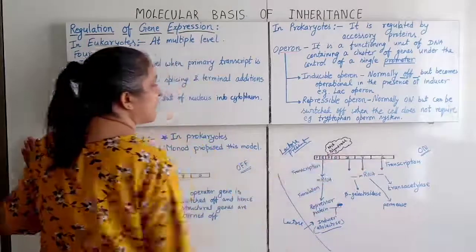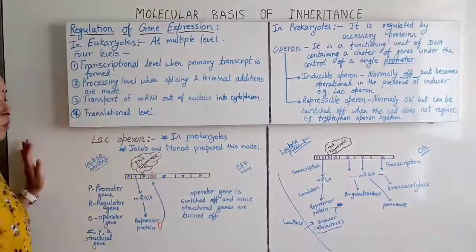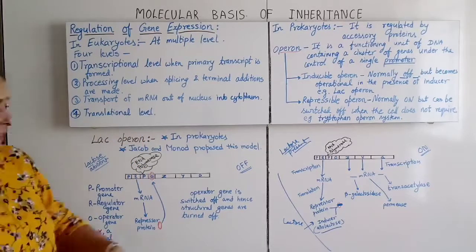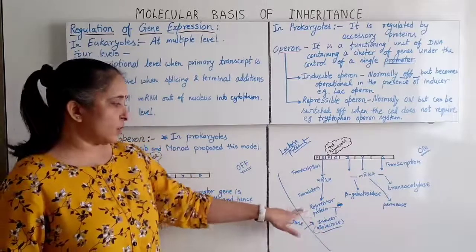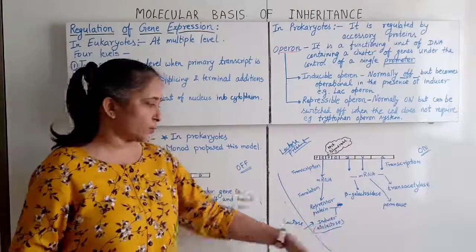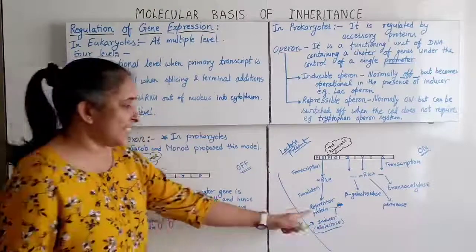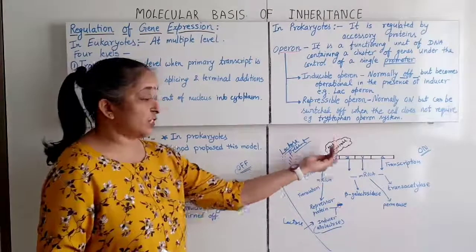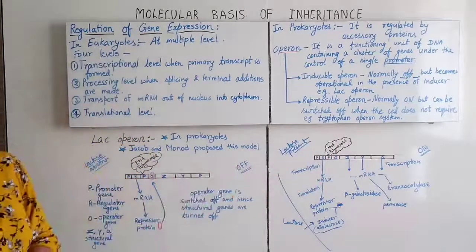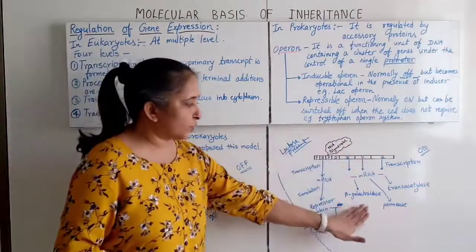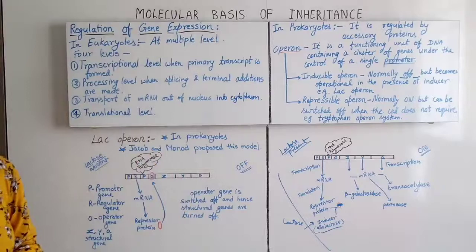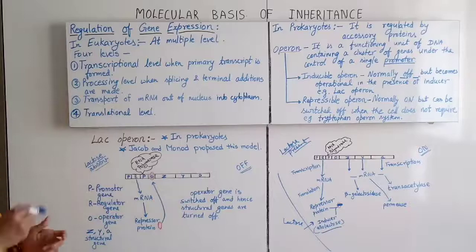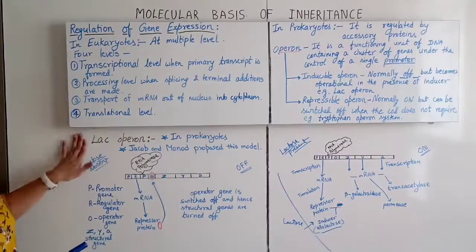This is the ON condition when lactose is present. A small amount of lactose converts into allolactose, which is the inducer. The repressor protein has high affinity for allolactose and binds to it, so it does not block the operator. RNA polymerase — attached to the promoter — slides along and produces enzymes for the digestion of lactose.